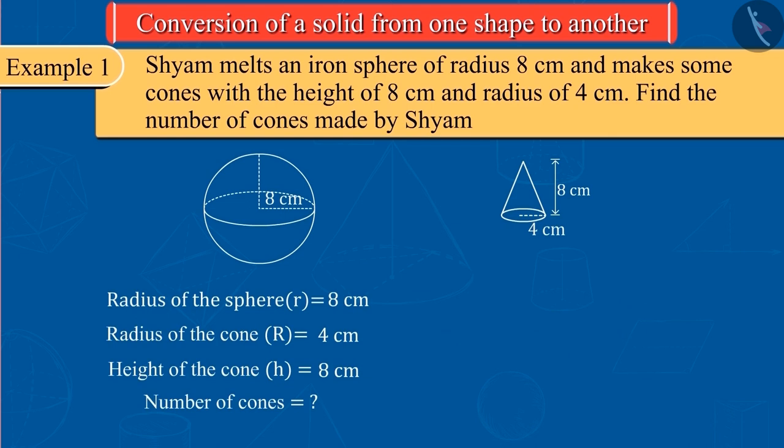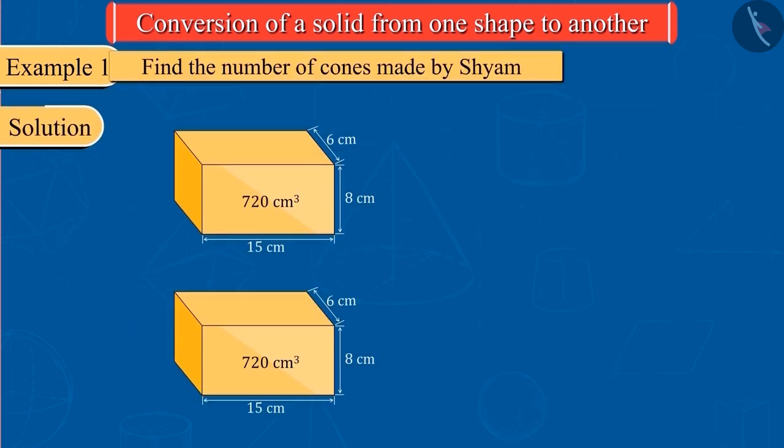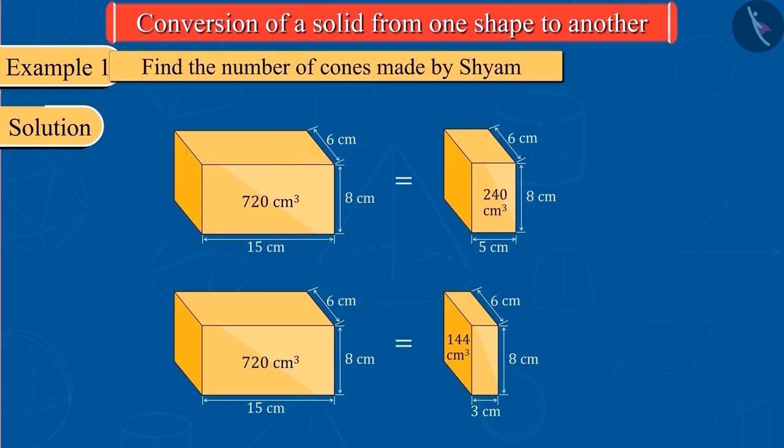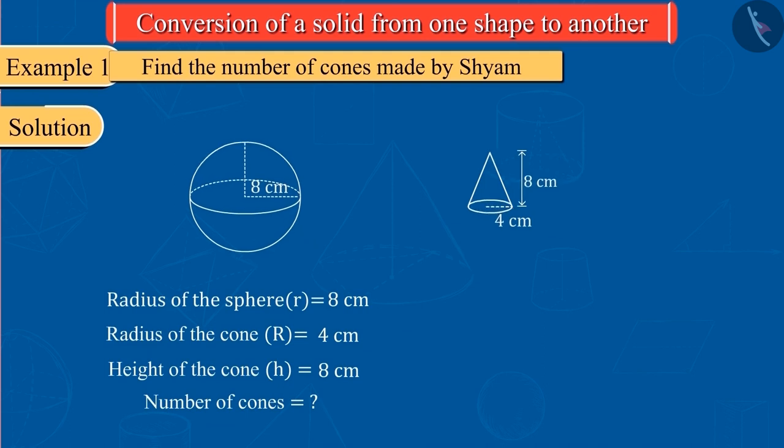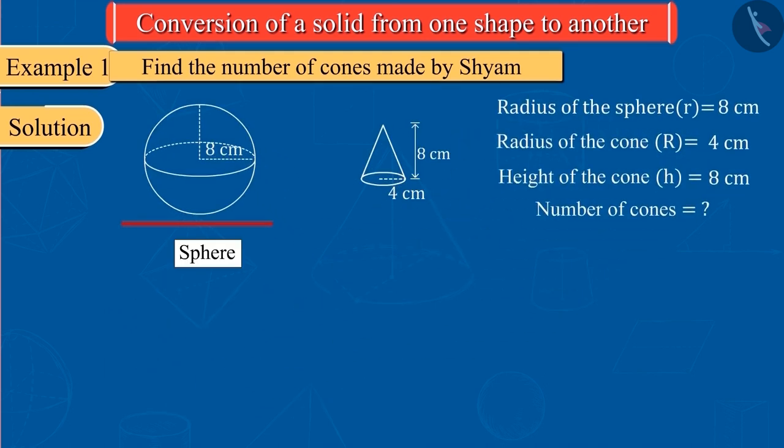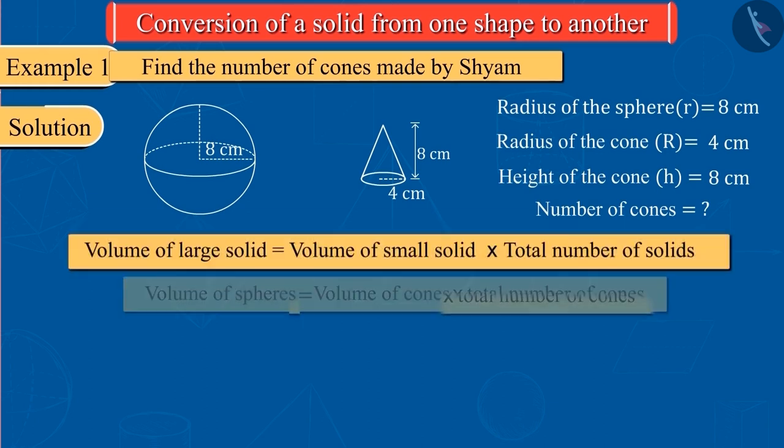We learned in the previous video that if a solid is converted into smaller solids of equal measure, the product of the volume of the smaller solids thus formed and the total number of smaller solids is equal to the volume of the larger solid. Here, we have big solid sphere and small solid cones. Therefore, we can also write this statement as follows.